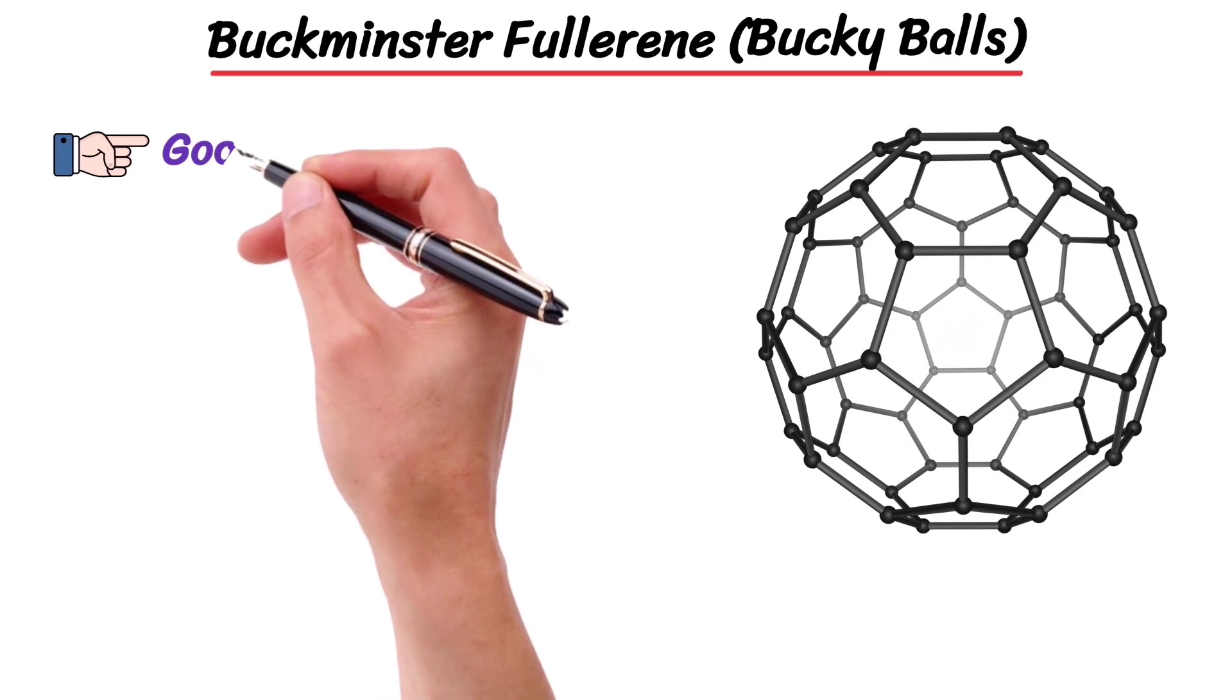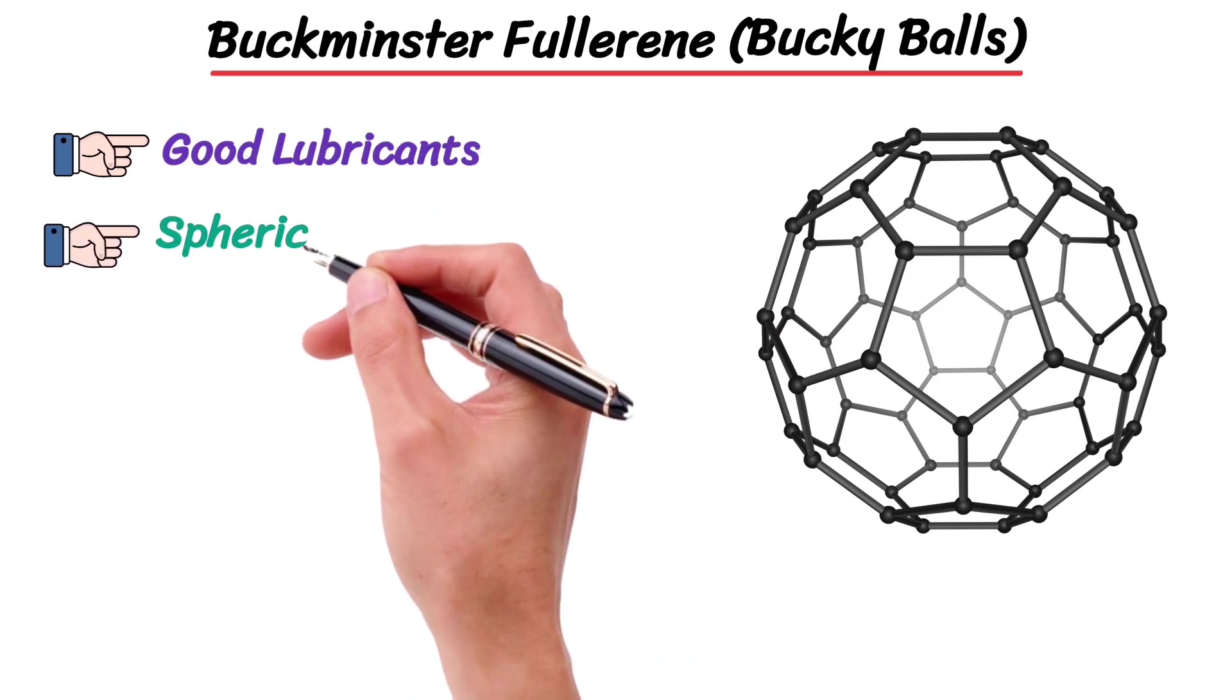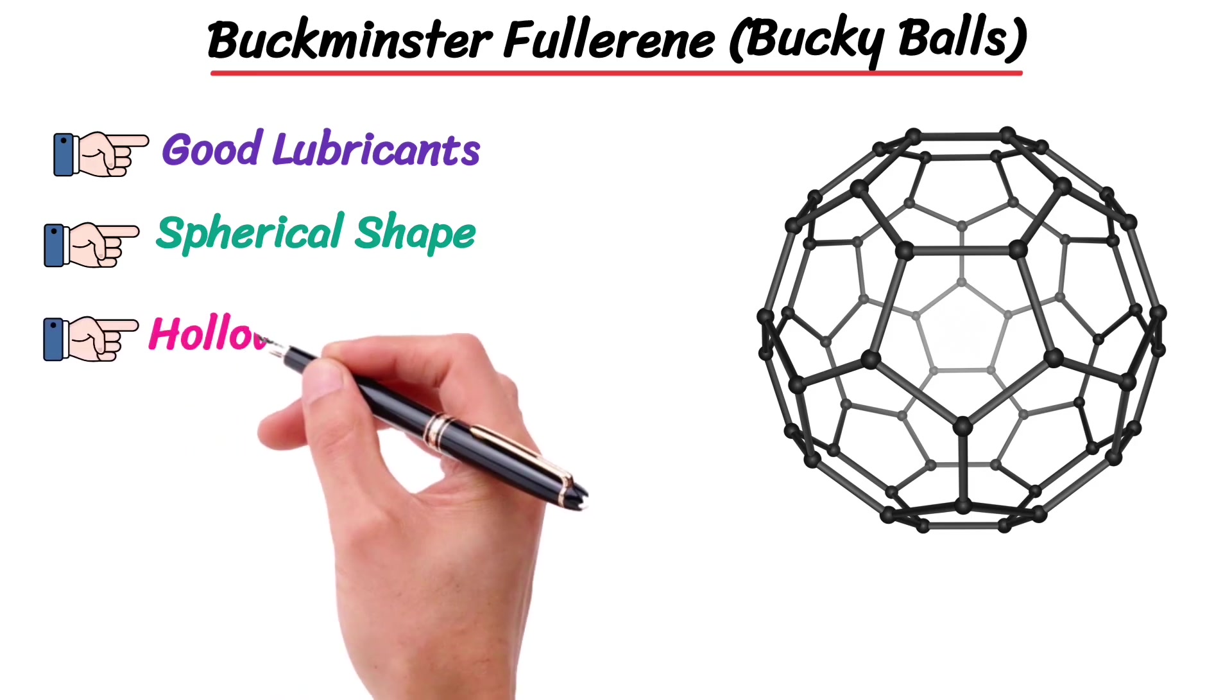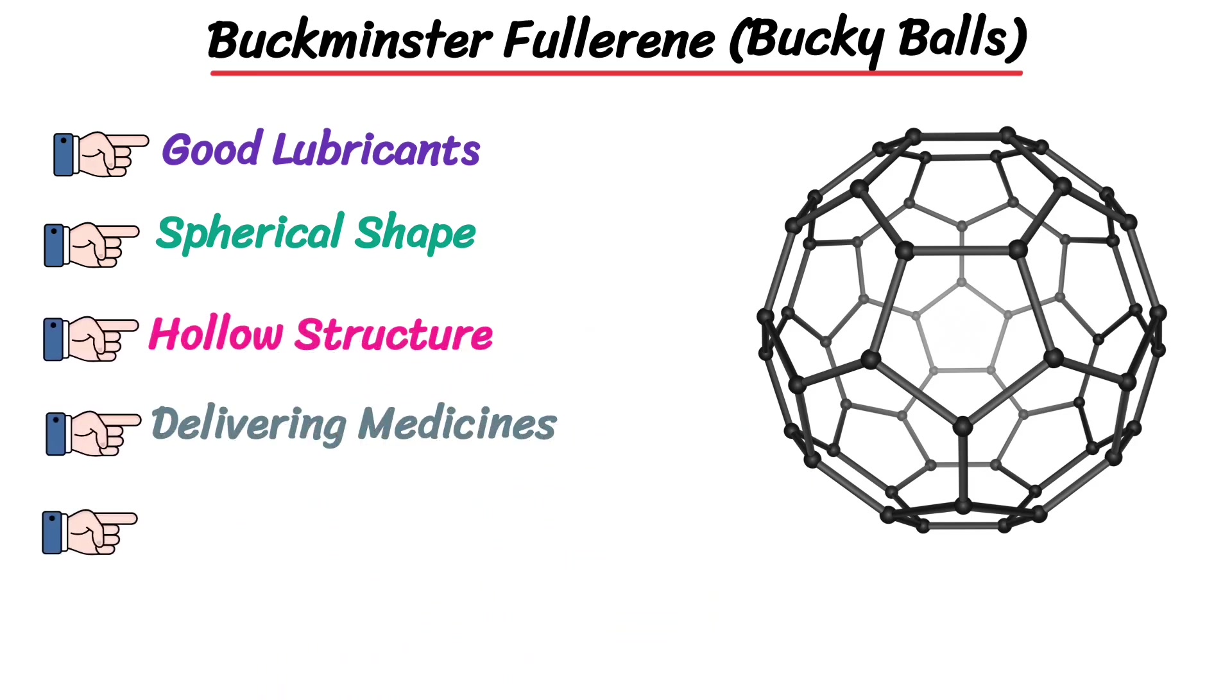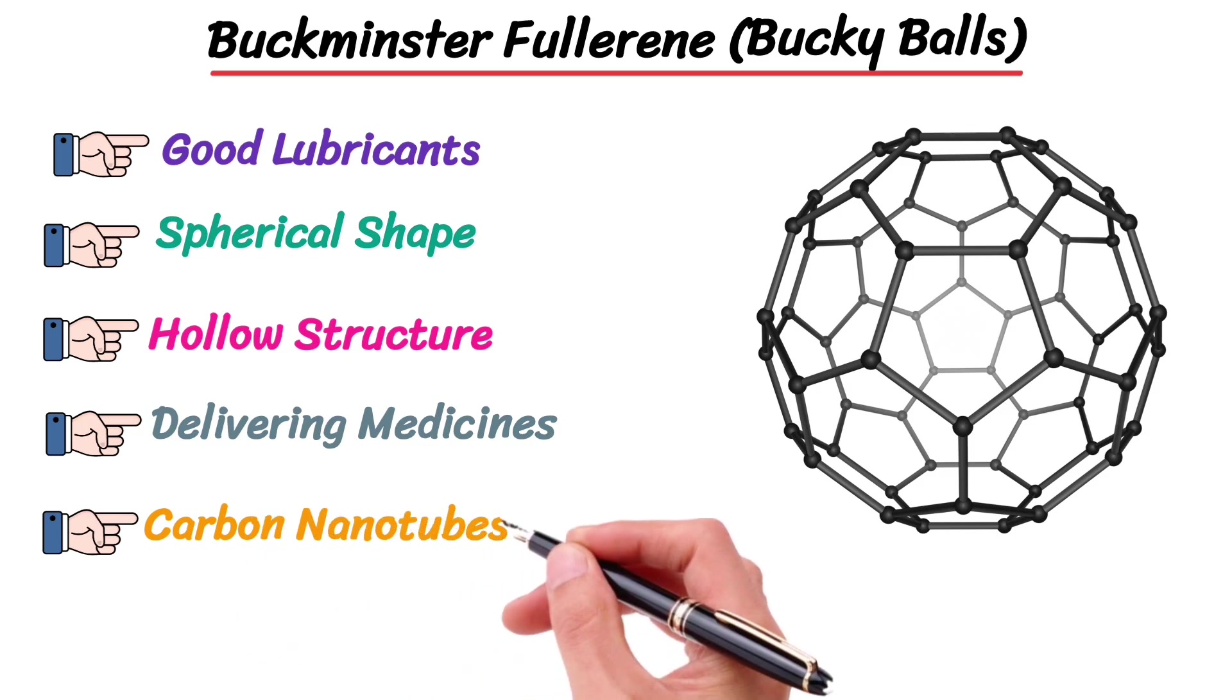Buckyballs are good lubricants because of their spherical shape. Their hollow structure could make them useful for delivering medicine in the future. Fullerenes are used in making carbon nanotubes based fabrics and fibers.